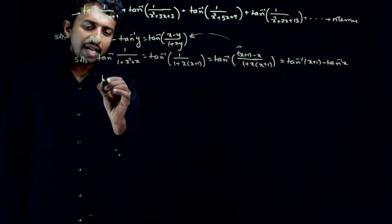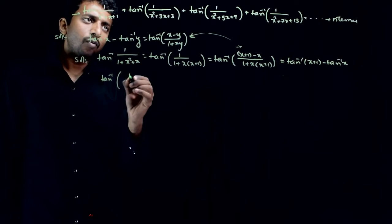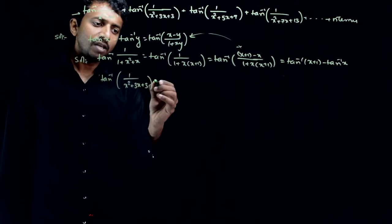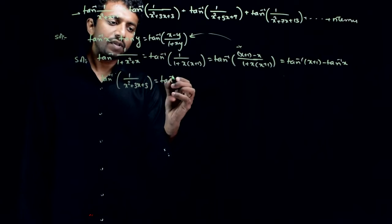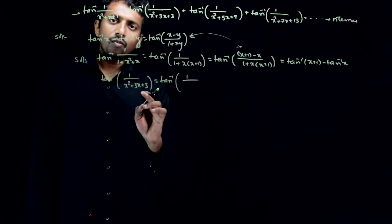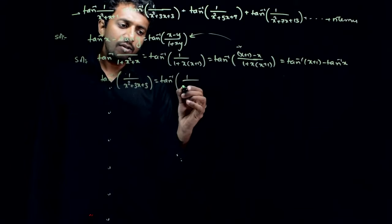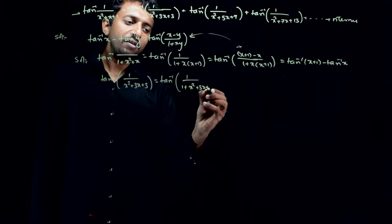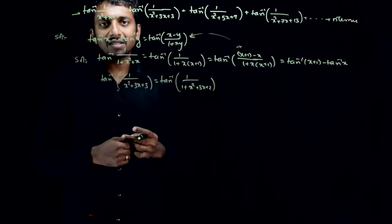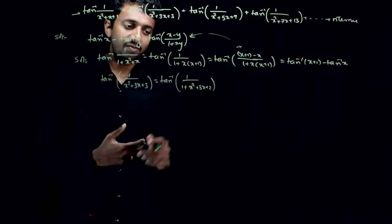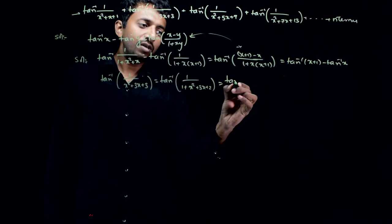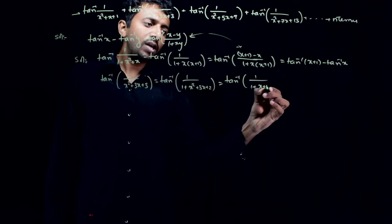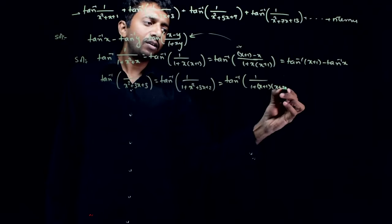Similarly, the second term is tan inverse of 1 by (x squared plus 3x plus 3), which equals tan inverse of 1 by (1 plus x squared plus 3x plus 2). Now x squared plus 3x plus 2 factors as (x plus 1) times (x plus 2), giving tan inverse of 1 by (1 plus (x plus 1)(x plus 2)).